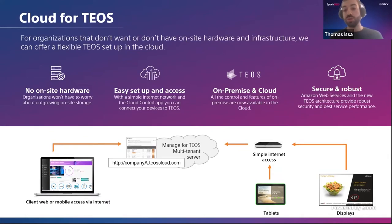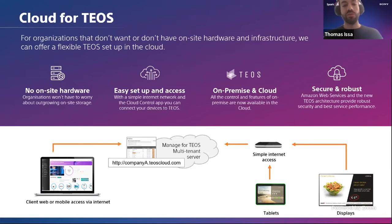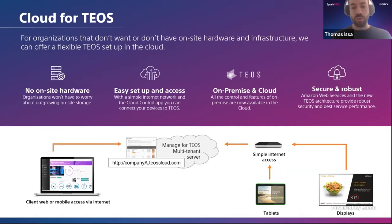This ensures that you can access all TEOS functionalities — from IP control of device, the scheduling, up to the signage, room booking, reception, and everything we offer in TEOS — from the cloud, from anywhere in the world at any time. We are using Amazon Web Services for our cloud hosting, to provide the most robust and secure way to make sure that any single data used in TEOS to control your devices and applications is completely secured with the best service performance all over Europe and all over the world.